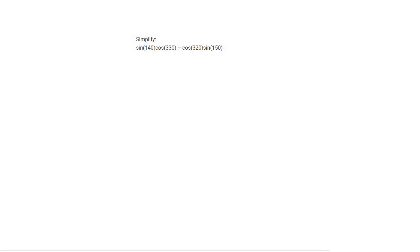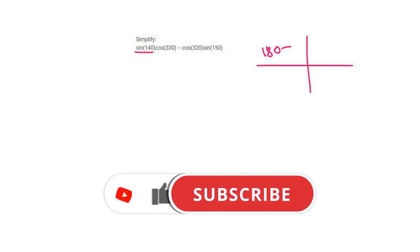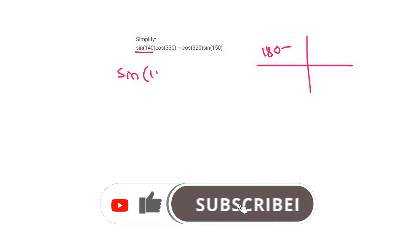With a question like this, you need to simplify any angle that is larger than 90 degrees. So sin of 140, we know that that is in quadrant number 2, and so that's in the 180 minus quadrant. So that's going to be the same as sin of 180 minus 40 degrees.